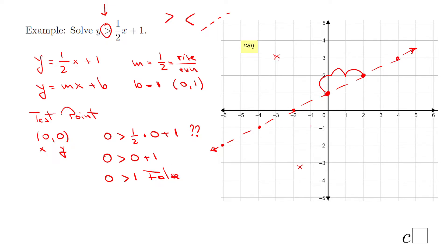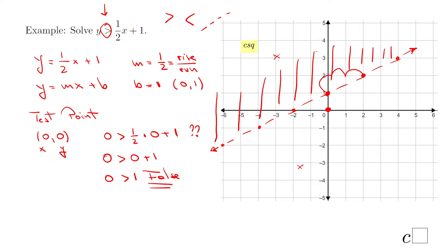Since the test point (0, 0) — the origin — gives a false statement, we switch sides: (0, 0) is on the bottom half-plane, so we go to the other side and shade the top. The shaded region is the solution set. You can verify by checking any point in it, for example (-2, 3): plug it in and you'll get a true statement. Rule: if you get false, jump to the other side and shade; if you get true, stay and shade that side.